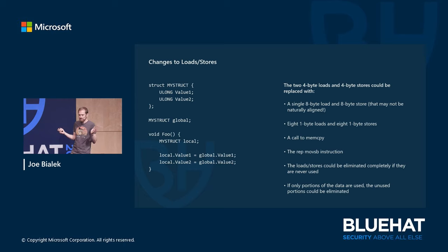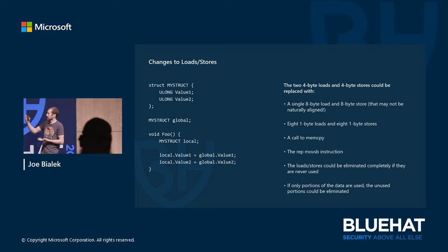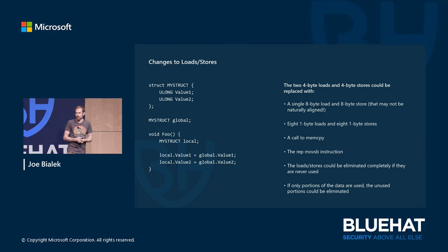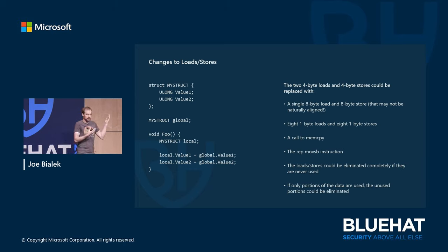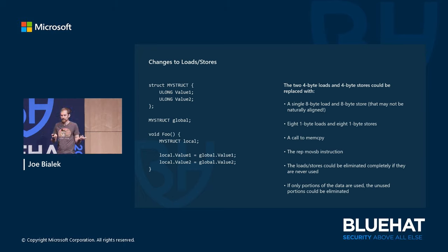What is the compiler allowed to do under the covers? I have a simple program here: a structure with two four-byte fields, a global variable of that structure type, and a function with a local variable of the same type. The function copies value one from the global to the local, then copies value two. Many people would expect two four-byte loads and two four-byte stores, but on most architectures today the compiler would turn this into a single eight-byte load and a single eight-byte store — half the number of instructions.